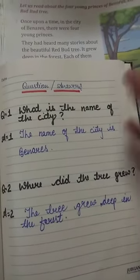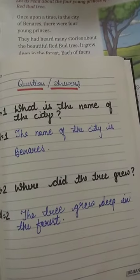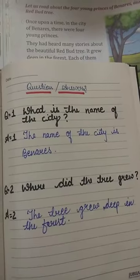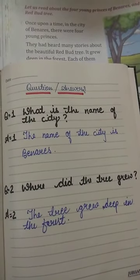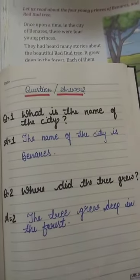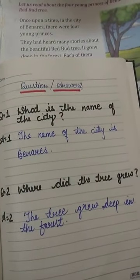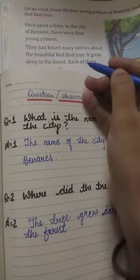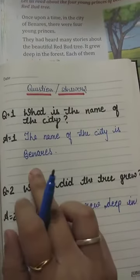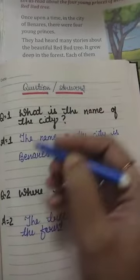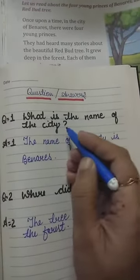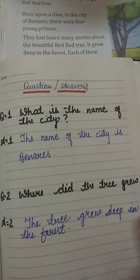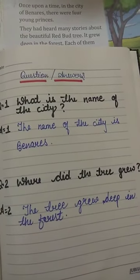Now you will understand. Today I have done two questions; I will do more another time to clear your concept further. You can also practice the same thing in your copy. Read the other passages yourself, ask yourself questions, and identify the answers. You can write just one word as the answer — for example, for 'What is the name of the city?' we wrote just 'Banaras.' I hope you liked it. Tomorrow I will come with a new topic. Till then, have a nice day.